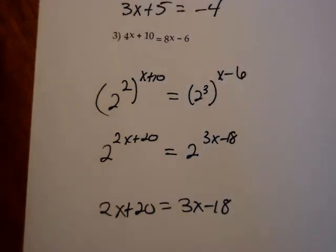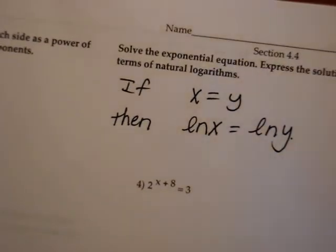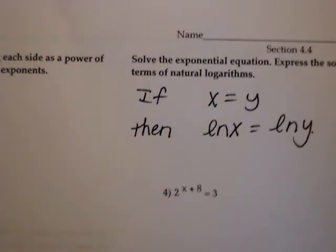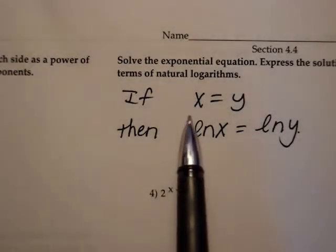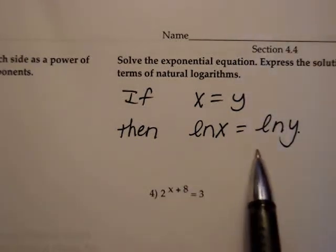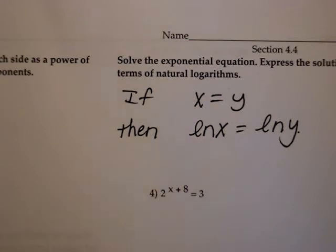That's the first type of exponential equations. If the instructions say to rewrite as the same base and equate the exponents, you must do it that way or you won't get credit. The second method always works no matter what. The instructions here say: solve the exponential equation and express the solution set in terms of natural logarithms. The rule we're using is: if x equals y, I can take the natural log of both sides. I can do almost anything I want as long as I do it to both sides. 'In terms of logarithms' also means don't use a calculator — we want an exact answer.